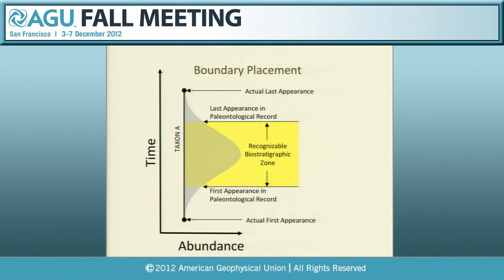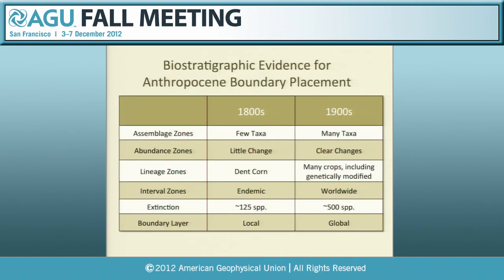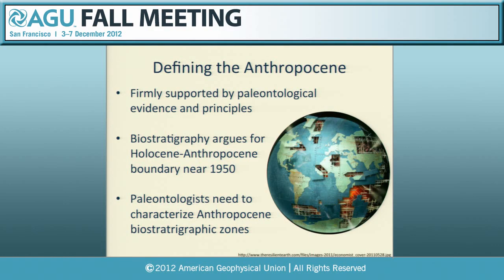Finally, thinking about where we would place the boundary: thinking about stratigraphic principles, it's not really the first appearance of a taxon that you pick up — you pick up the time when it's abundant. So we would want to place the boundary where all these signs are abundant, which for really all of these kinds of zones is in the 1900s, around 1950, where it really picks up. I think defining the Anthropocene as a formal epoch is already supportable by paleontological principles you would apply to other epochs. What's already out there argues for a boundary near 1950, but paleontologists need to start thinking about this modern depositional record the same way we think about rocks, and actually define those zones.